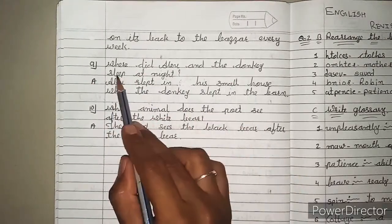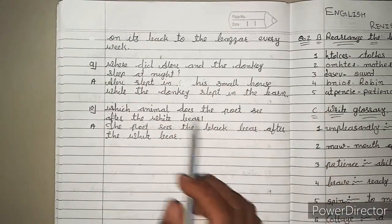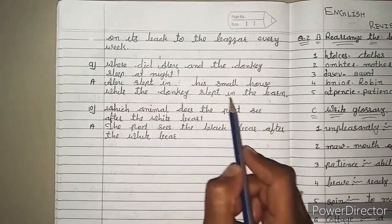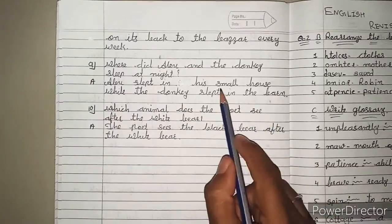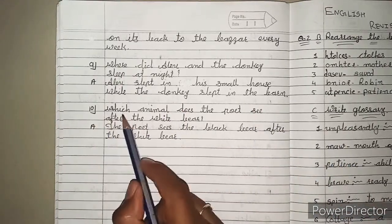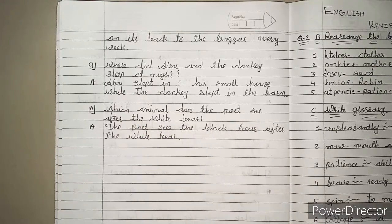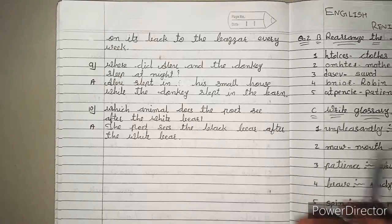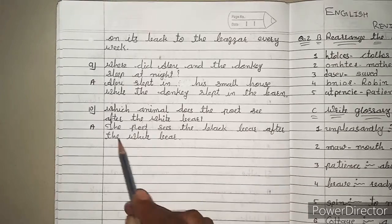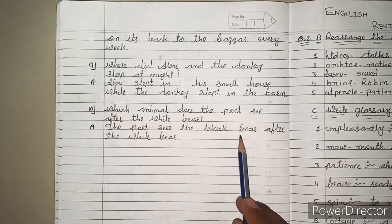9. Where did Abu and the donkey sleep at night? रात को Abu और donkey कहाँ पर सोते थे? Answer: Abu slept in his small house while the donkey slept in the barn. Abu उसके छोटे से घर में सोता था और donkey अपने barn में सोता था. 10. Which animal does the poet see after the white bear? Poet ने white bear के बाद कौनसा animal देखा? The poet sees the black bear after the white bear.